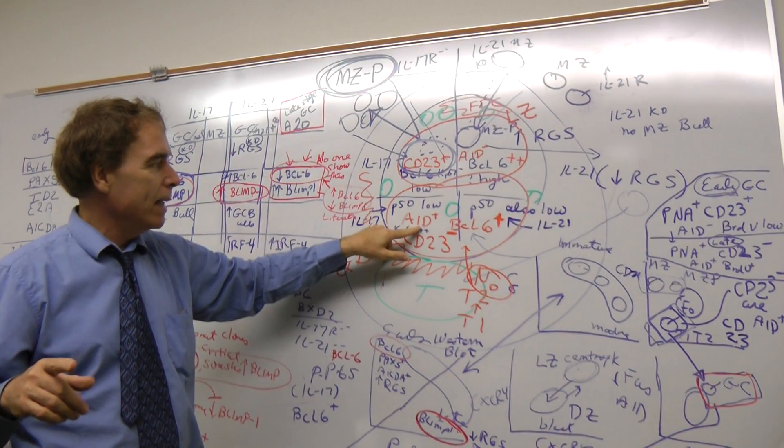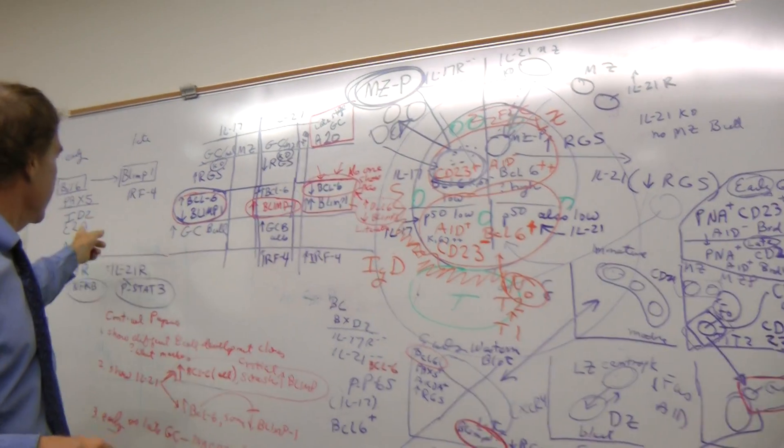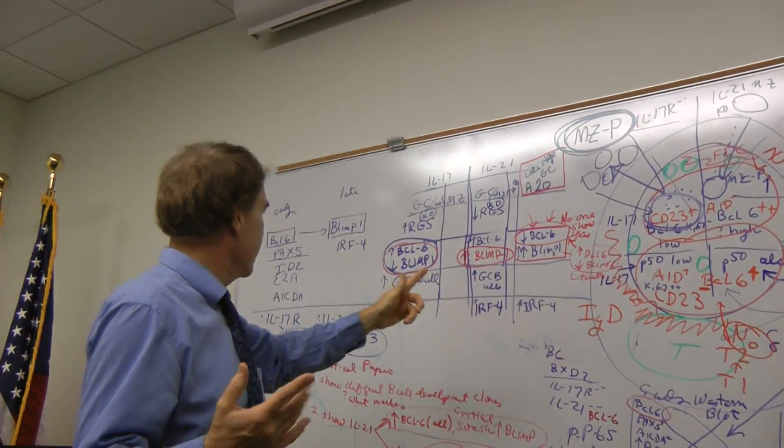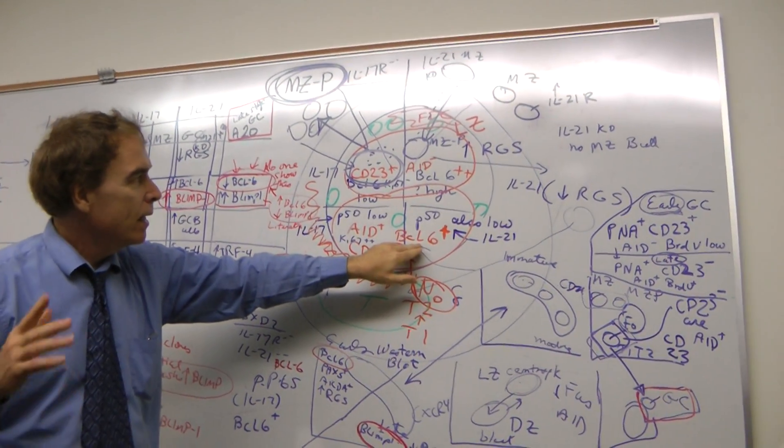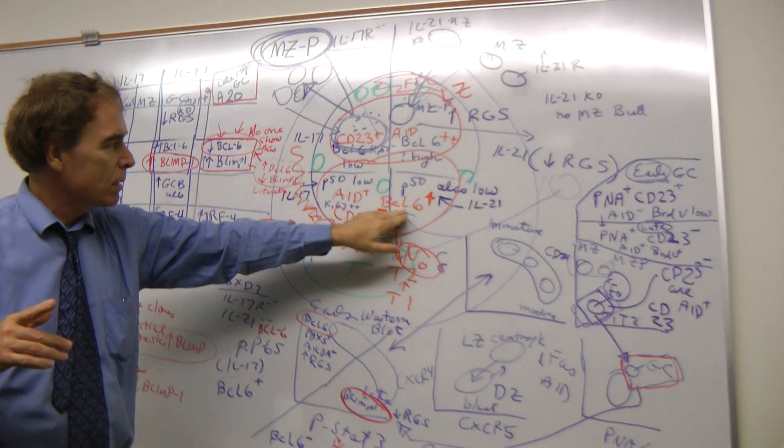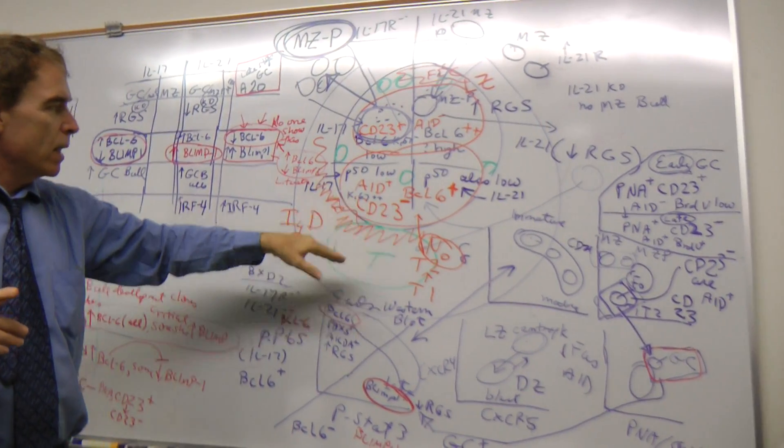And then they upregulate AID, and that might be something like PEX5 or ID2, E2A. There are certain genes that do regulate AID, and these become even higher BCL-6 positive, and they start to cycle too.